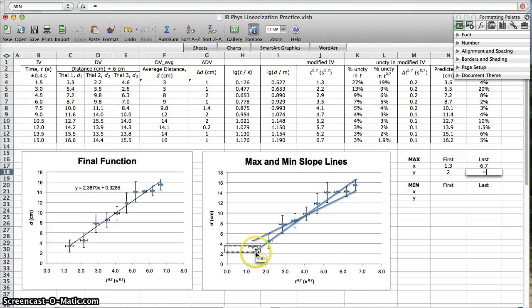For the max slope line, we are going all the way to the last data point. So find the last y value. Y is distance in centimeters. So go to the bottom of that column. Here's the last one. And then, we didn't just use that y value. We went up the error bar. So you have to add the uncertainty.